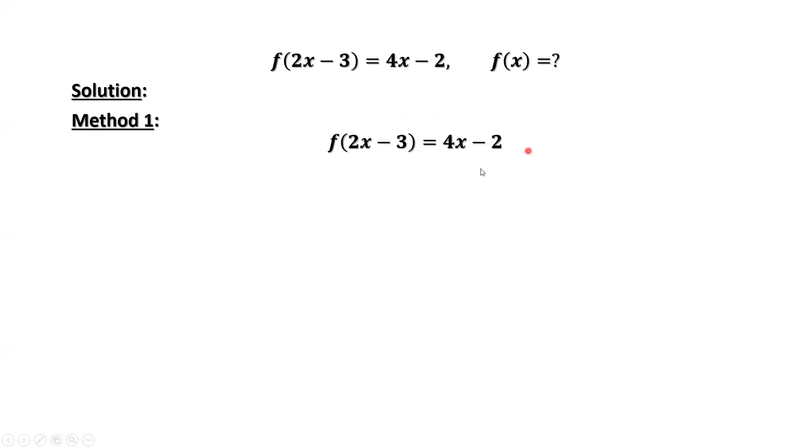We want to rewrite the right-hand side in terms of 2x minus 3. How to do this? 2x. Here's 4x.